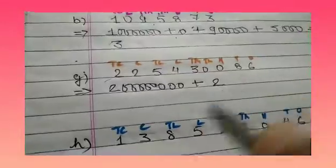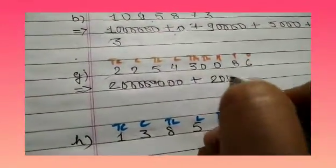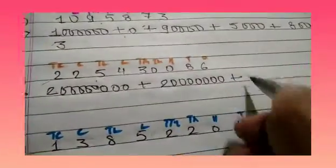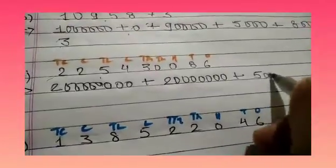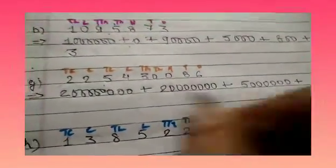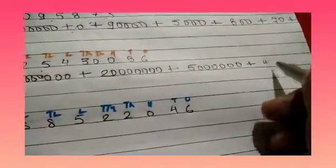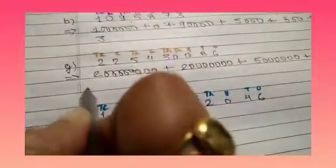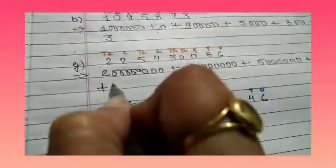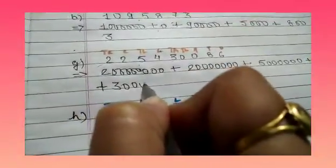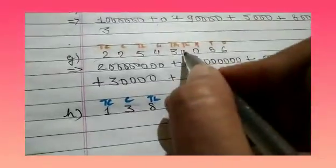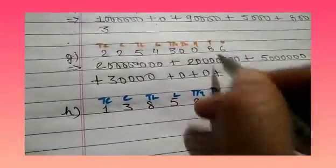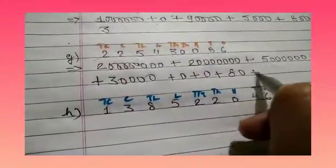Plus 2 is at the 10 lakh position. 10 lakhs has 6 zeros: 1, 2, 3, 4, 5 and 6. Plus 4 is at the lakh position, so 4 followed by 5 zeros: 1, 2, 3, 4 and 5. Plus 3 is at the 10,000 position, so 3 followed by 1, 2, 3 and 4 zeros. Plus 0 is at the thousand position — we will write 0 or we can leave. Plus 0. Plus 8 is at the 10th position, so we will write 80. Plus 6.